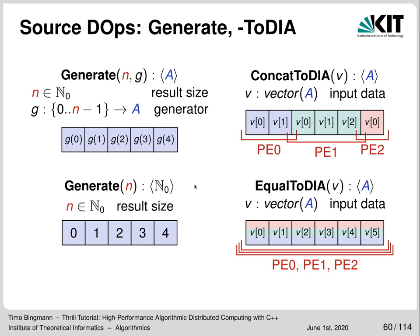For source operations: Generate creates a DIA of size n by passing numbers 0 to n-1 to a generator function which constructs the items — often used to generate random input or index numbers. There is also a plain generate version simply creating a DIA containing the numbers 0 to n-1. Generate should never be used to convert a vector or array into a DIA. For that there are two simpler methods: ConcatToDIA, which concatenates the vector data at each worker into a long DIA (when each worker has one slice of the data), and EqualToDIA, which assumes identical vector data on each worker and cuts out the part the worker will be responsible for.